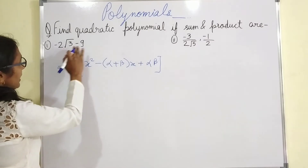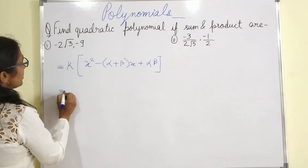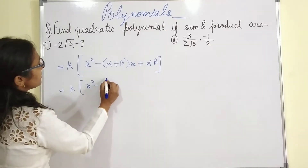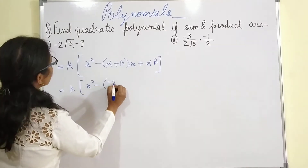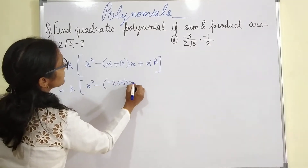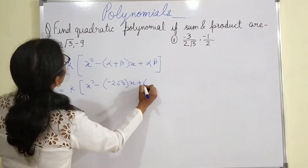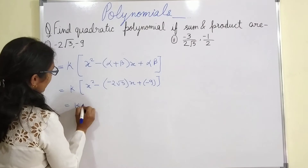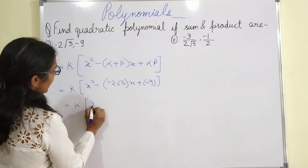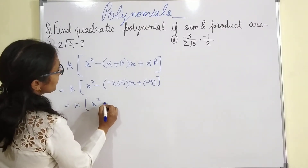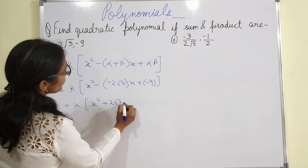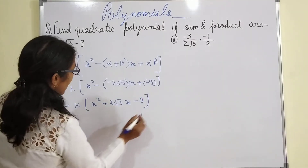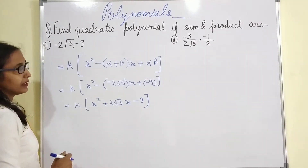So if the sum is given and the product is also given, the quadratic equation will be x squared minus (−2√3)x plus (−9), which gives x squared + 2√3x − 9. This is the quadratic equation.